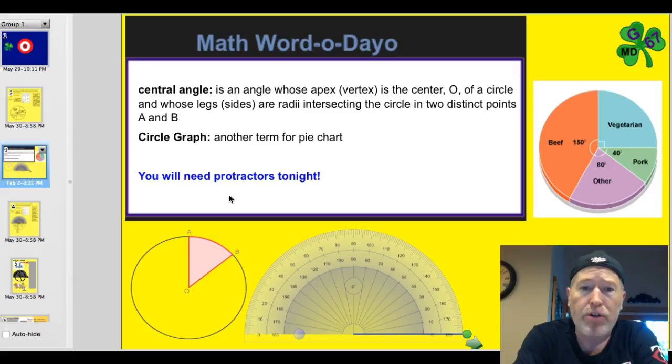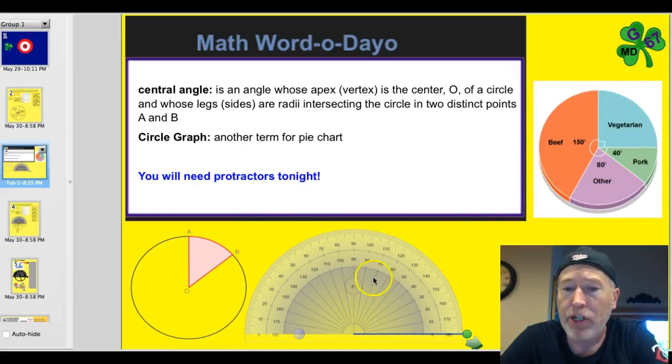We're ready to look at some vocabulary. We'll work through a couple other examples. I'm sorry this is going to take a little longer when we're working, but I think it will make it useful for you. You're going to need a protractor tonight. So make sure you grab one of those. All right. Just two simple words here. Central angle. That's the angle whose apex or vertex is the center. It's O in this case of a circle. And whose legs are radii extending from the circle. So here's A and B. So this is a central angle right here. All right. And then a circle graph. It's just another name for a pie chart. And, of course, this is a protractor.